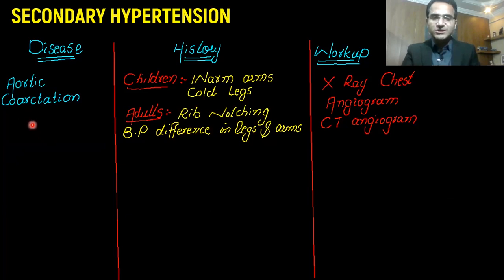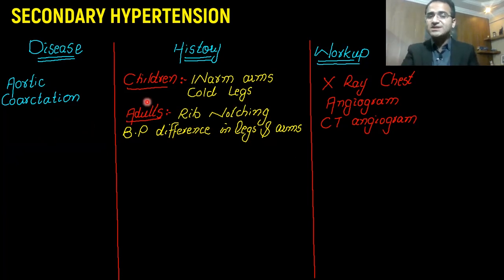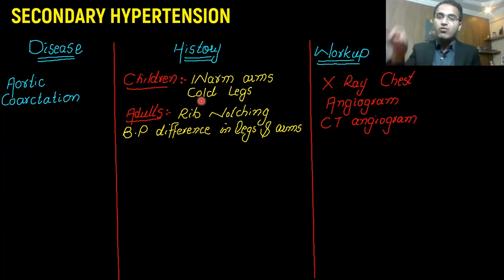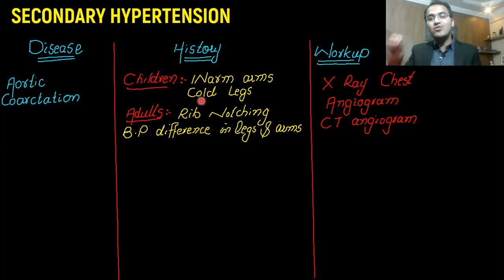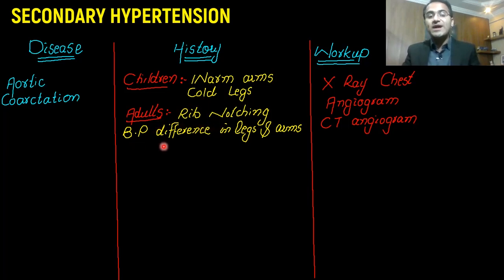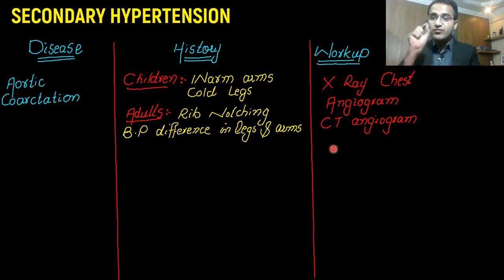The fourth cause is aortic coarctation, which is a constriction of the aorta as it exits the heart. In children, there will be a history of warm hands and cold legs. Since the arteries to the hands arise from the aorta before the constriction, blood supply to the hands is intact and increased, leading to warm hands. The blood supply to the legs arises after the constriction, so it is reduced, leading to cold legs. In adults, you will find rib notching on X-ray and a blood pressure difference between the legs and arms — the hallmark of aortic coarctation. Workup includes chest X-ray, angiogram, and CT angiogram.